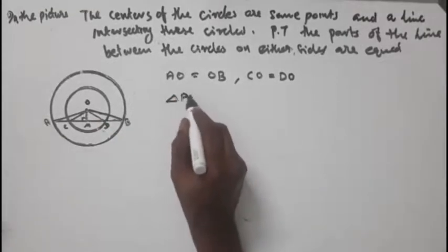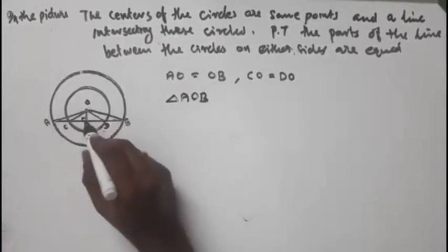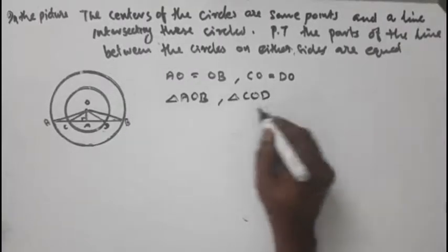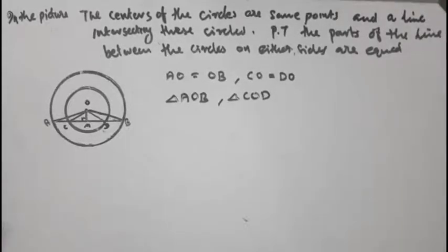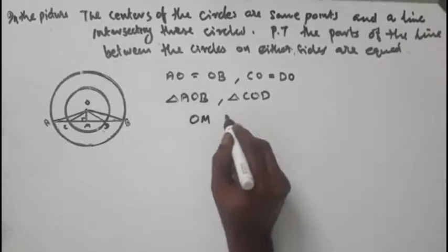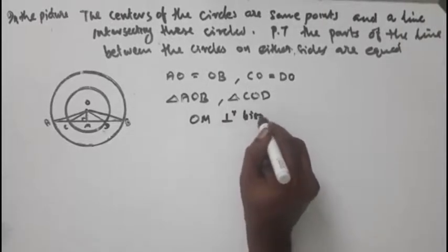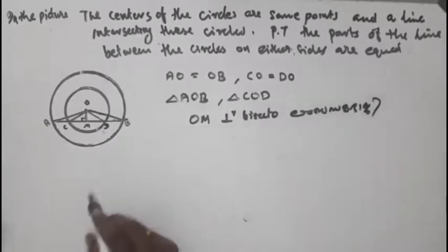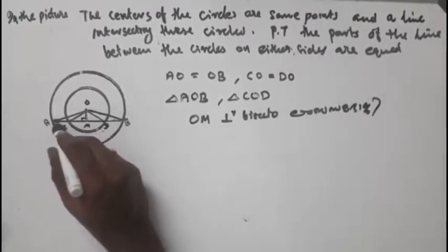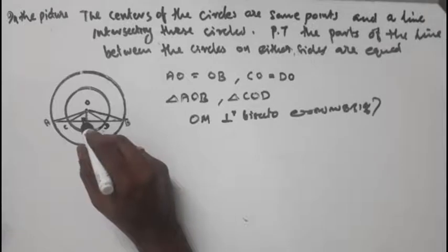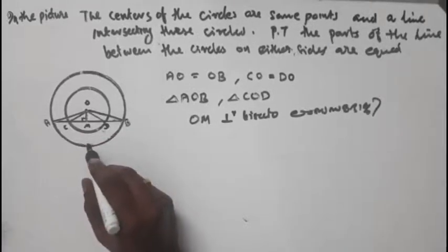This chord is AOB. Triangle COB — these triangles are isosceles. The perpendicular bisector — this line AB and CD are equal to the same length. This line is at 90 degrees, perpendicular to the chord. This line is M and N.